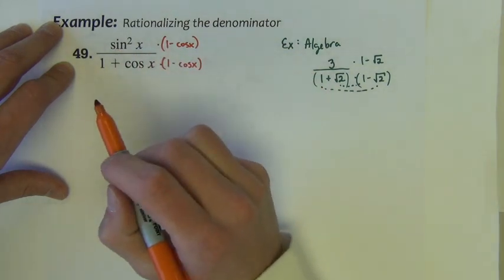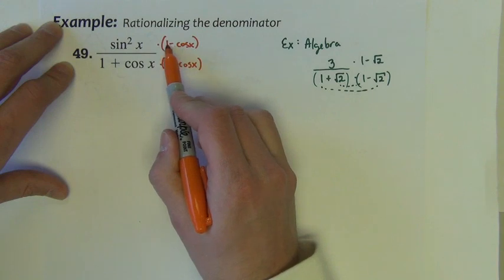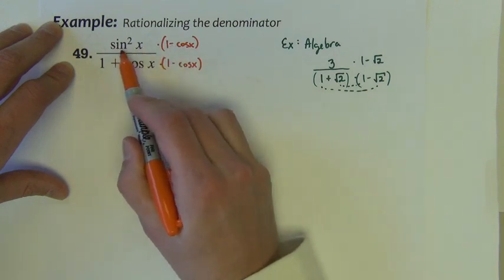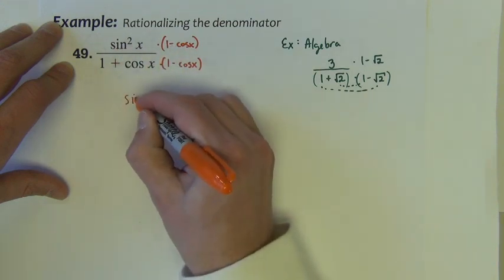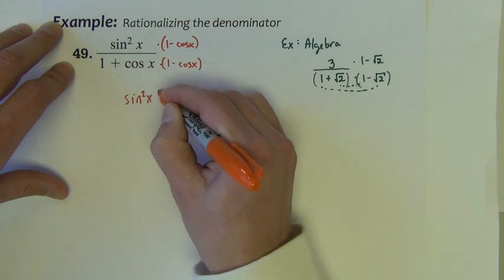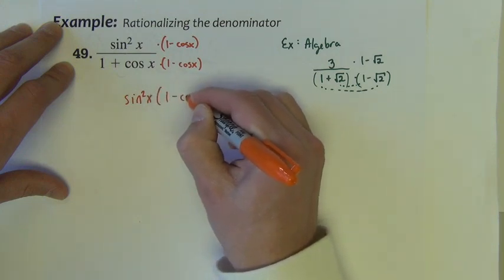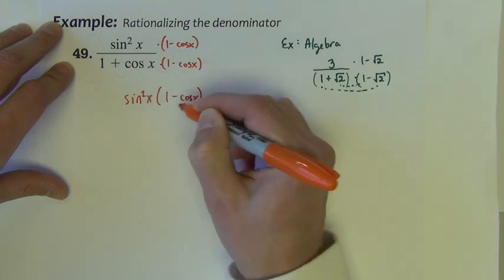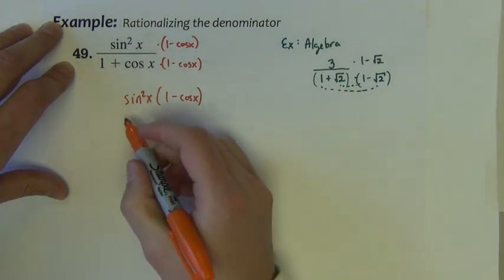In the numerator, you could do one of two things. You could distribute sine squared to each term, or you could just leave the sine squared in front. And experience in doing identities tells me to just leave it in front. And you'll gain that same experience too here over time.